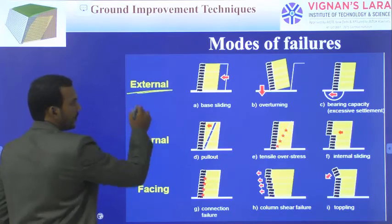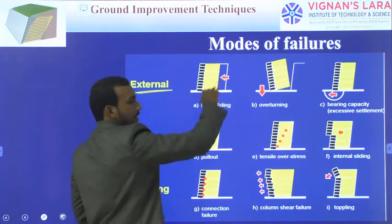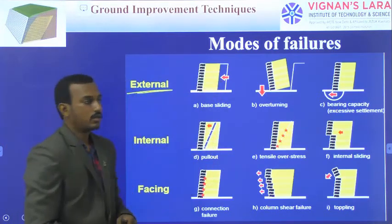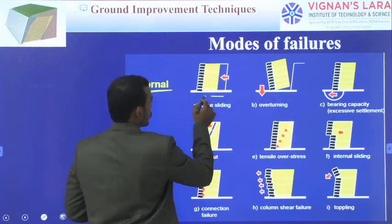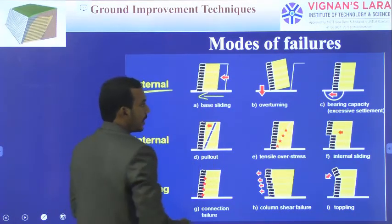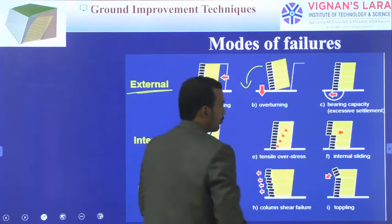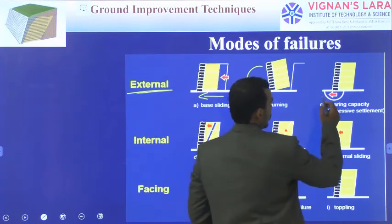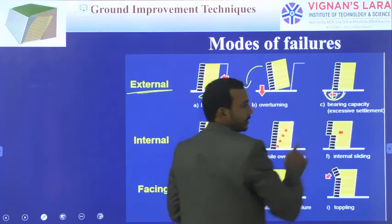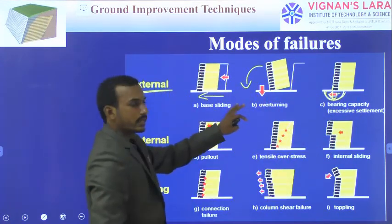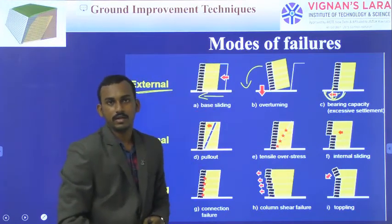So these are the modes of failure. The first is external failure — the entire structure considered as a single material. Base sliding means the entire structure slides. Overturning means the entire structure overturns. The third is bearing capacity or excessive settlement. These three are for external stability, considering the entire structure as a single material.